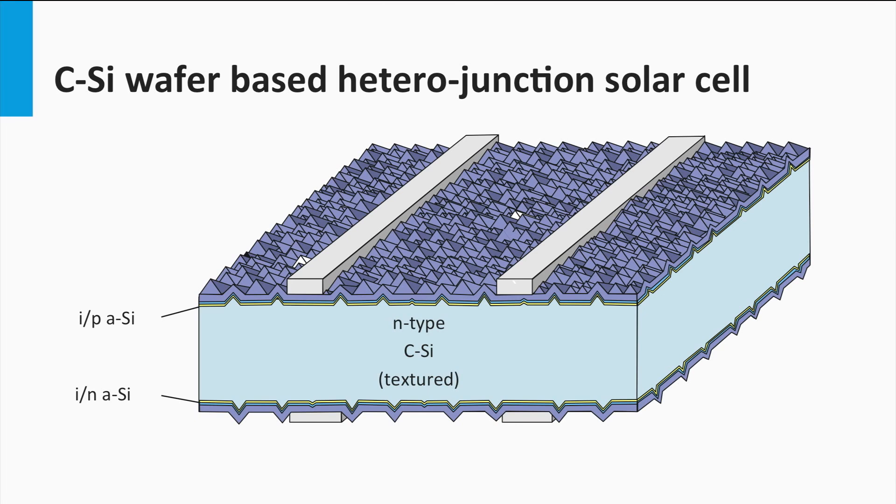This means that making the front surface and the back surface field in this type of solar cells is very cheap. Furthermore, this technology allows to use the N-type wafers.